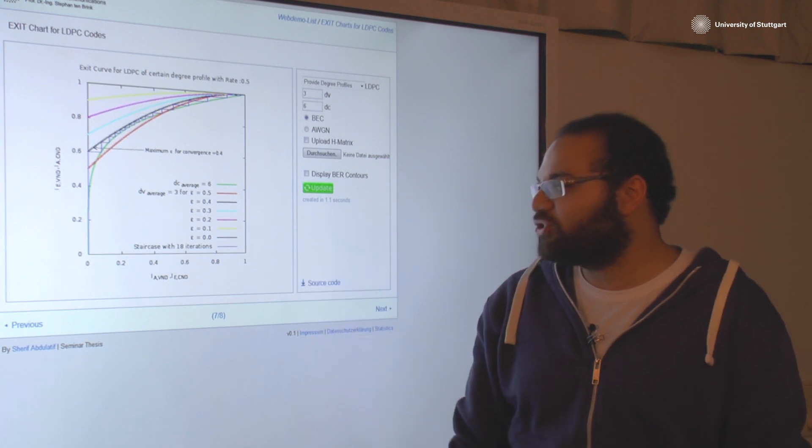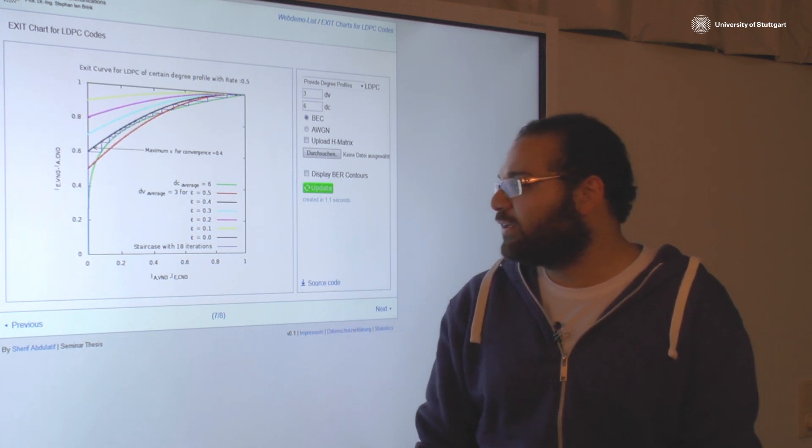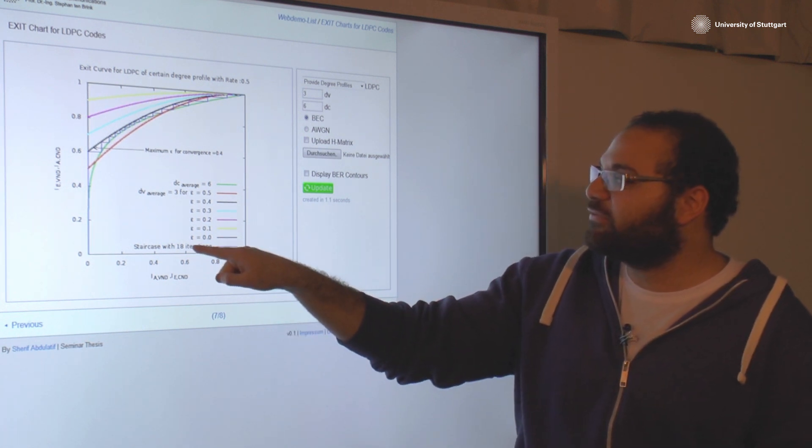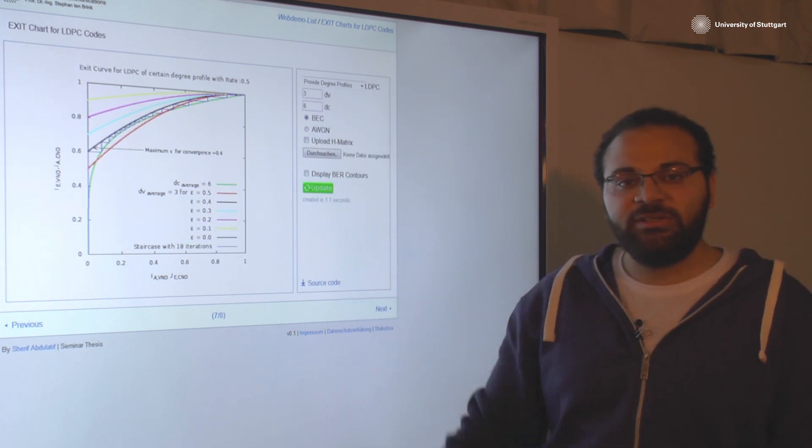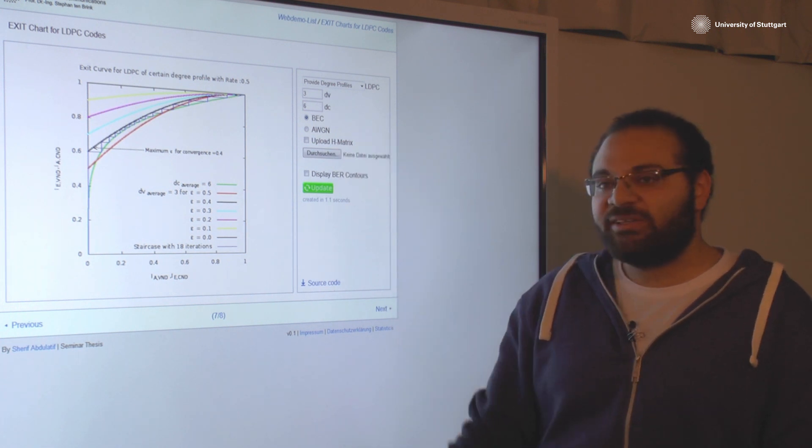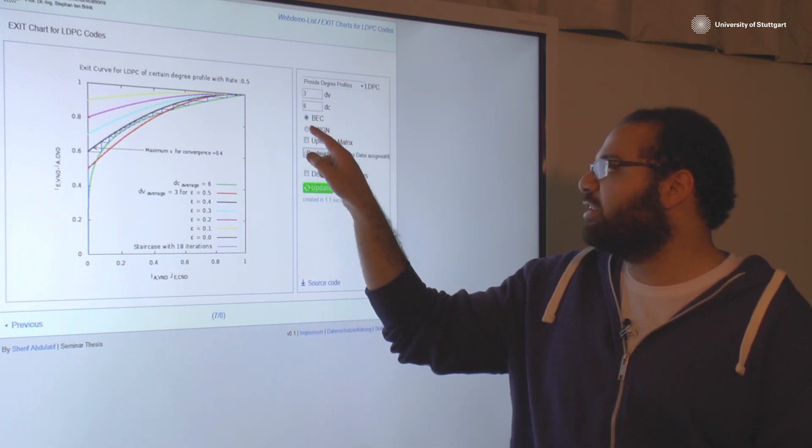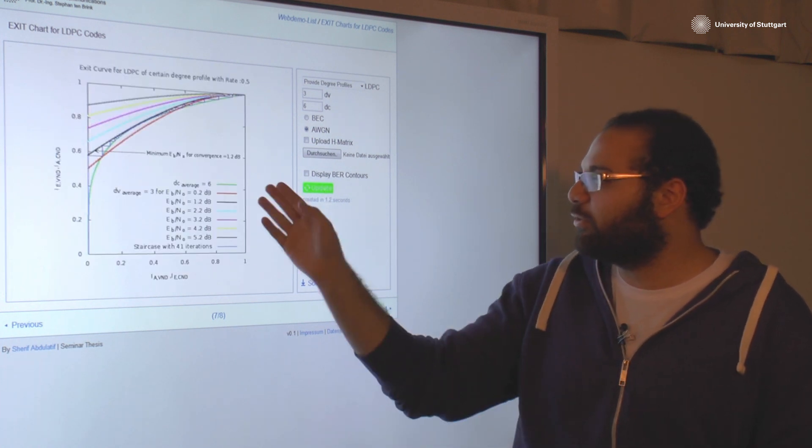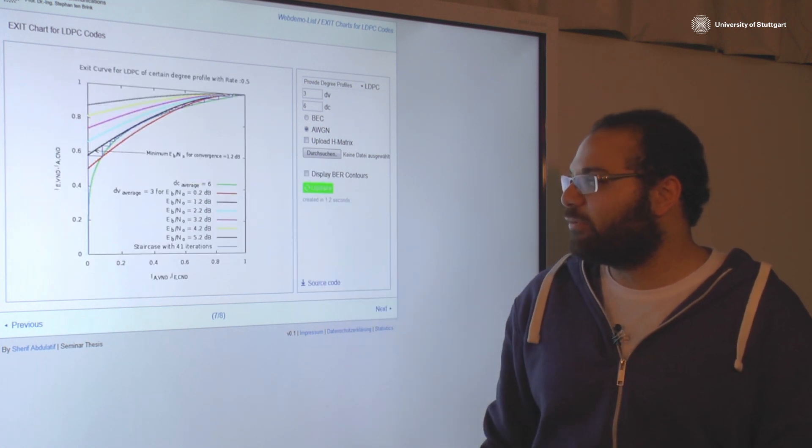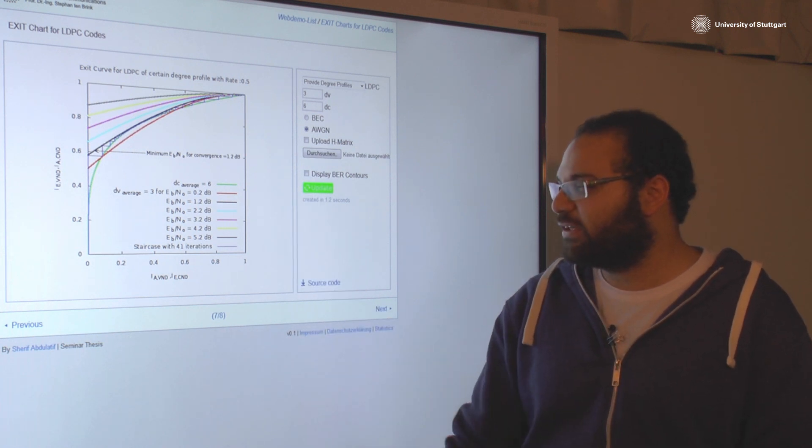You can see the number of iterations here. For example, this is between 18 iterations. You can change here the degree profiles or you can upload your H matrix and you can visualize it for AWGN. Here you have the minimum EB over N nodes that achieves the convergence in the same style as the binary erasure channel.